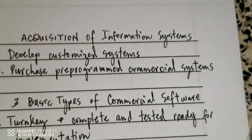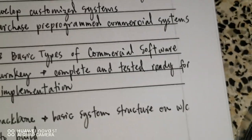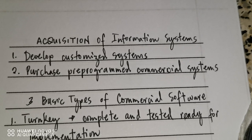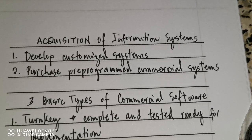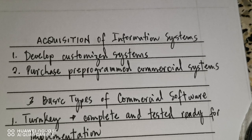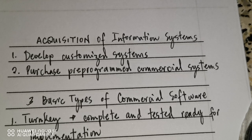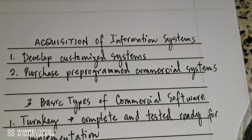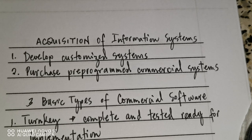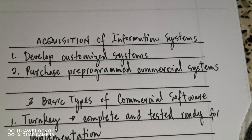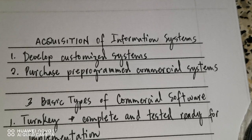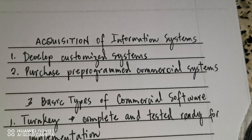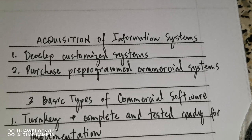There are two kinds of acquisition of information systems. The first is developed customized systems, where the company itself develops its own information system. The second is purchased pre-programmed commercial systems, where the company buys an existing system.